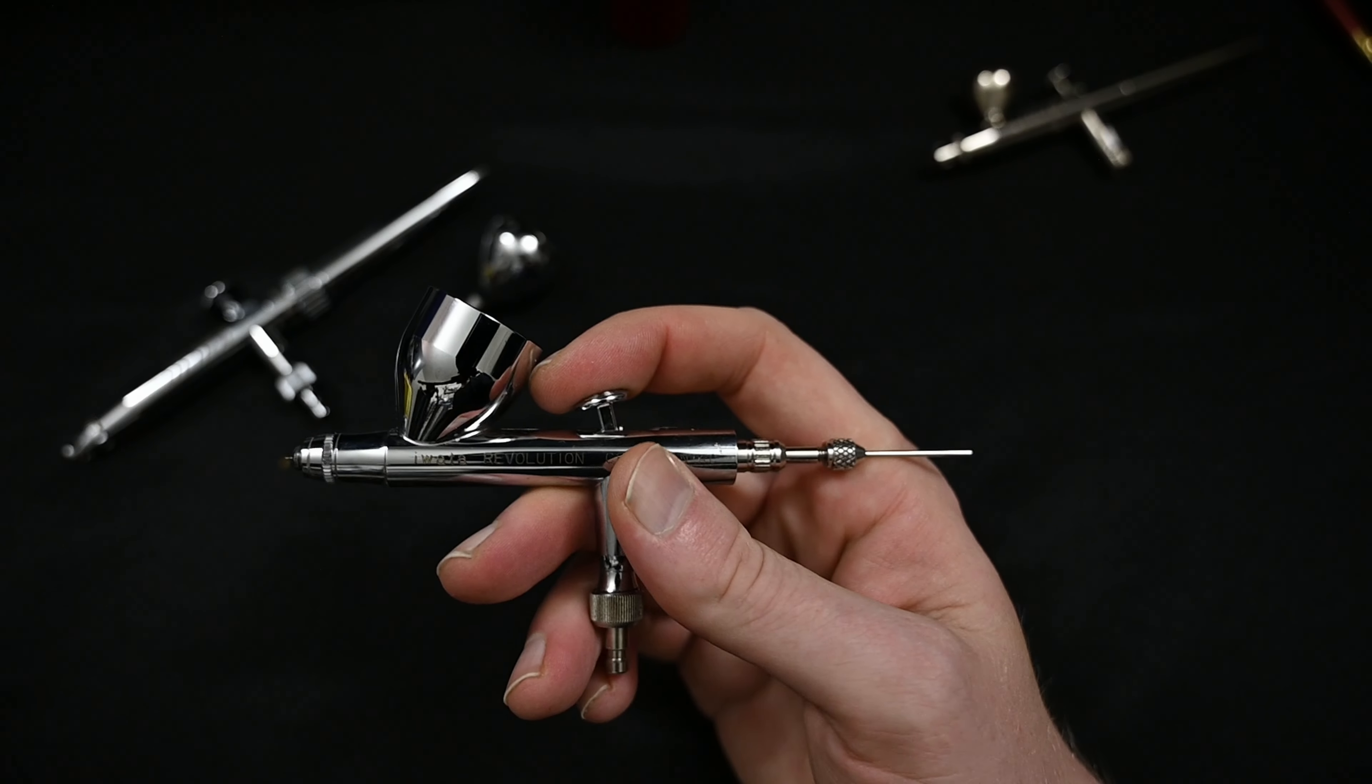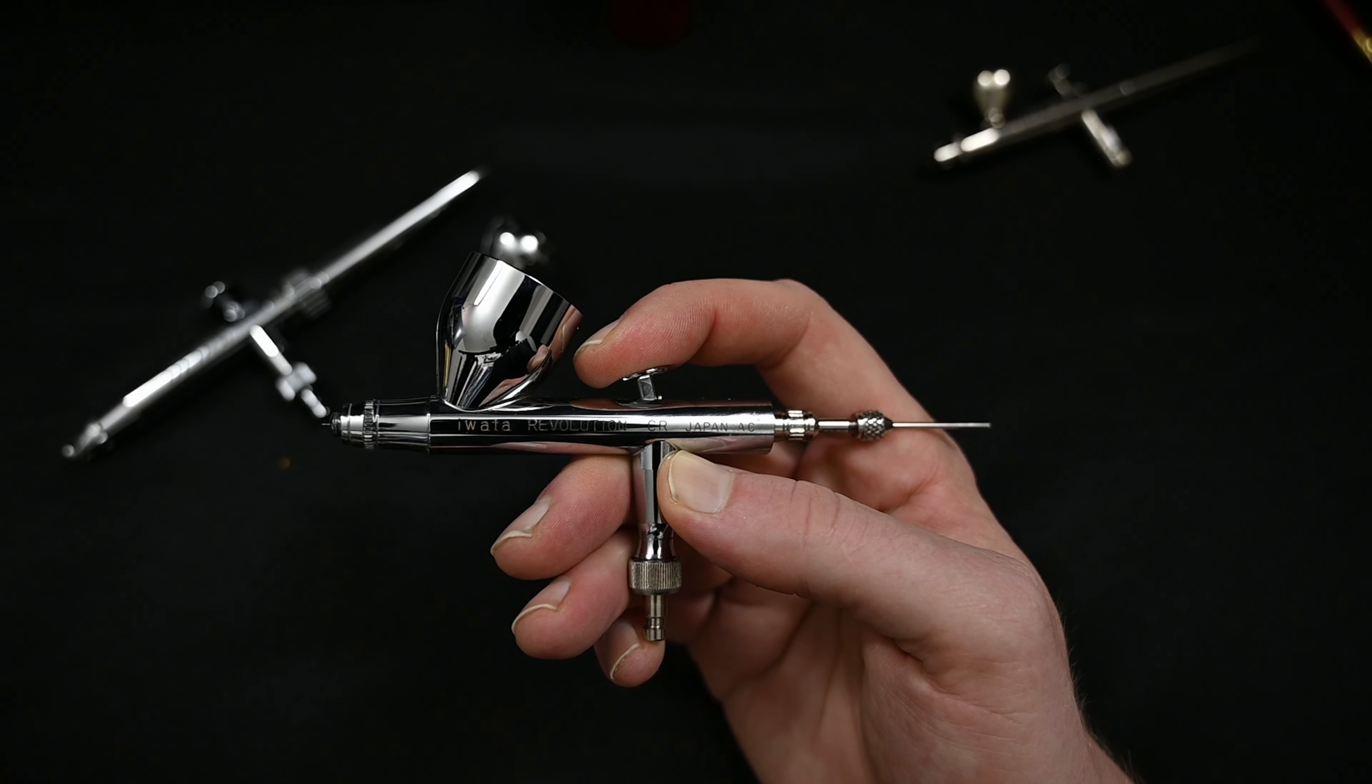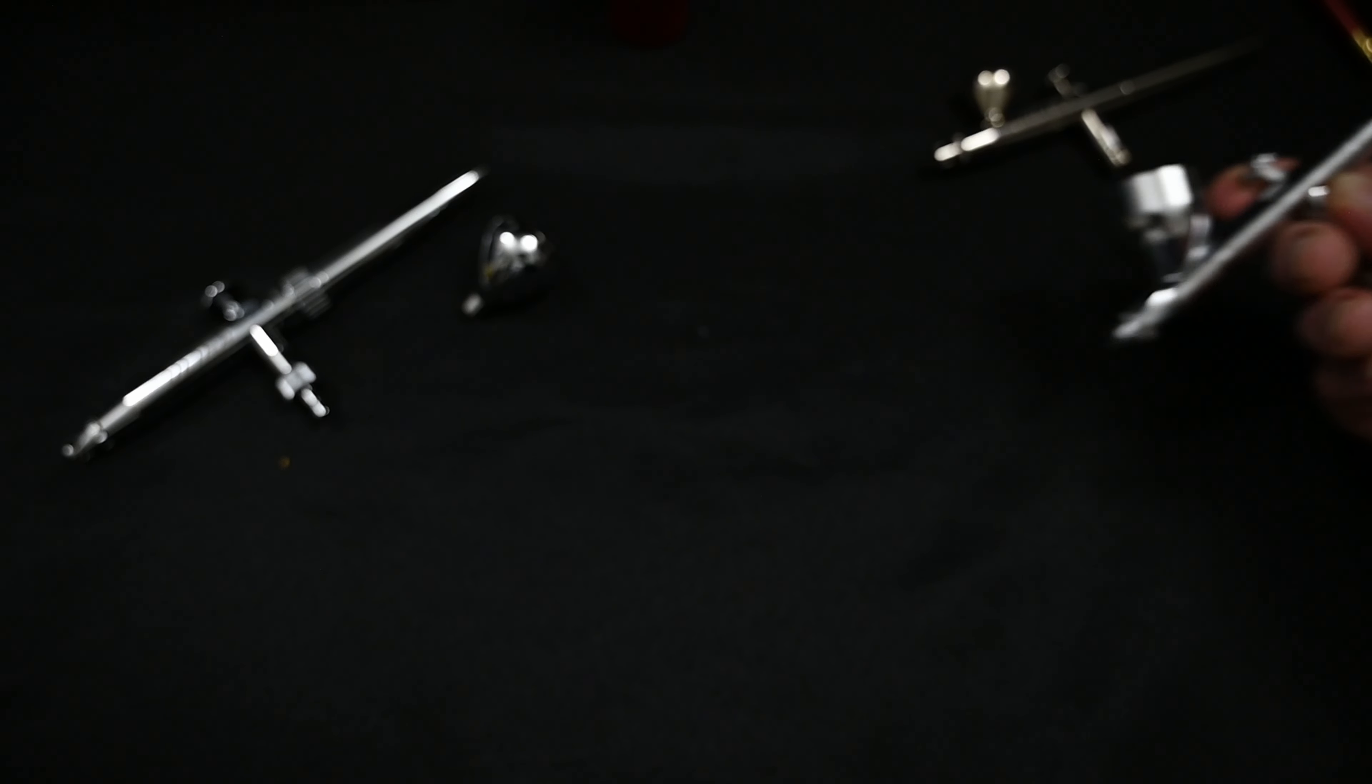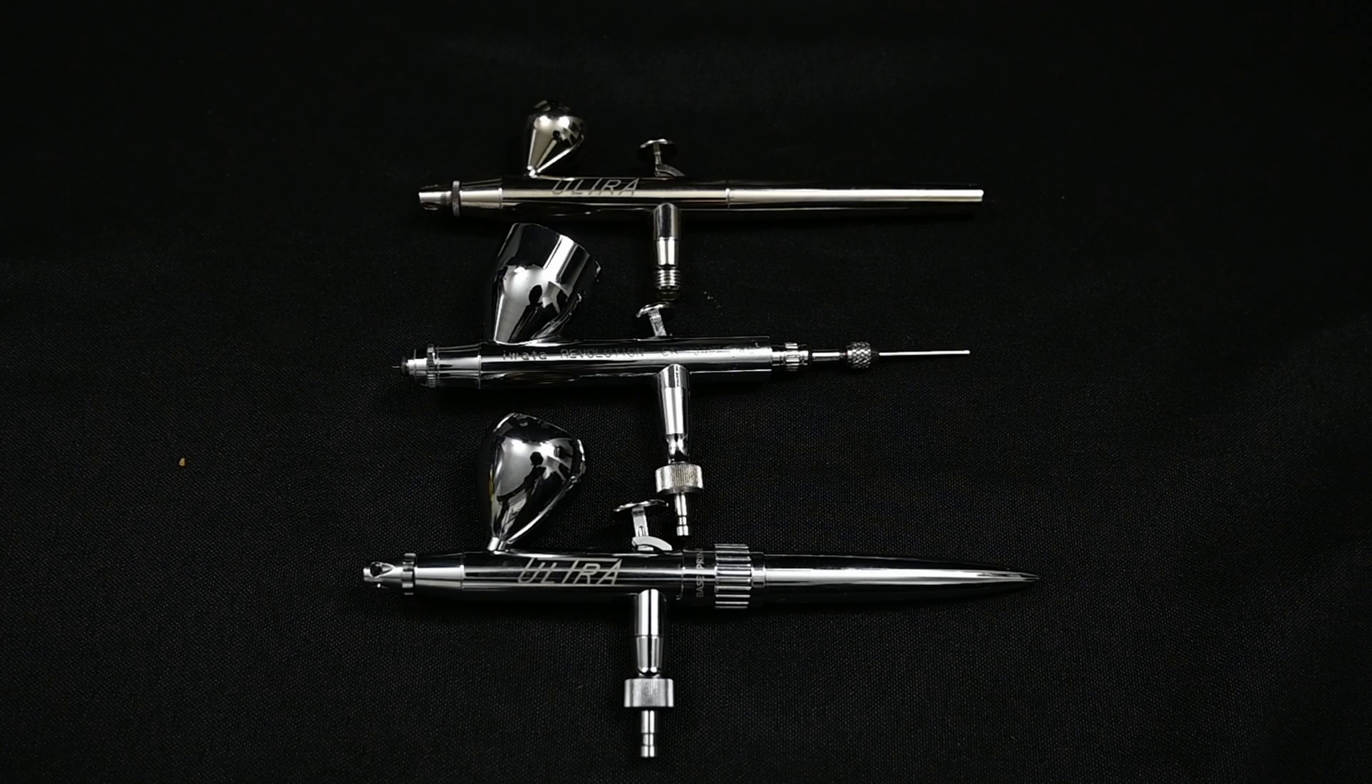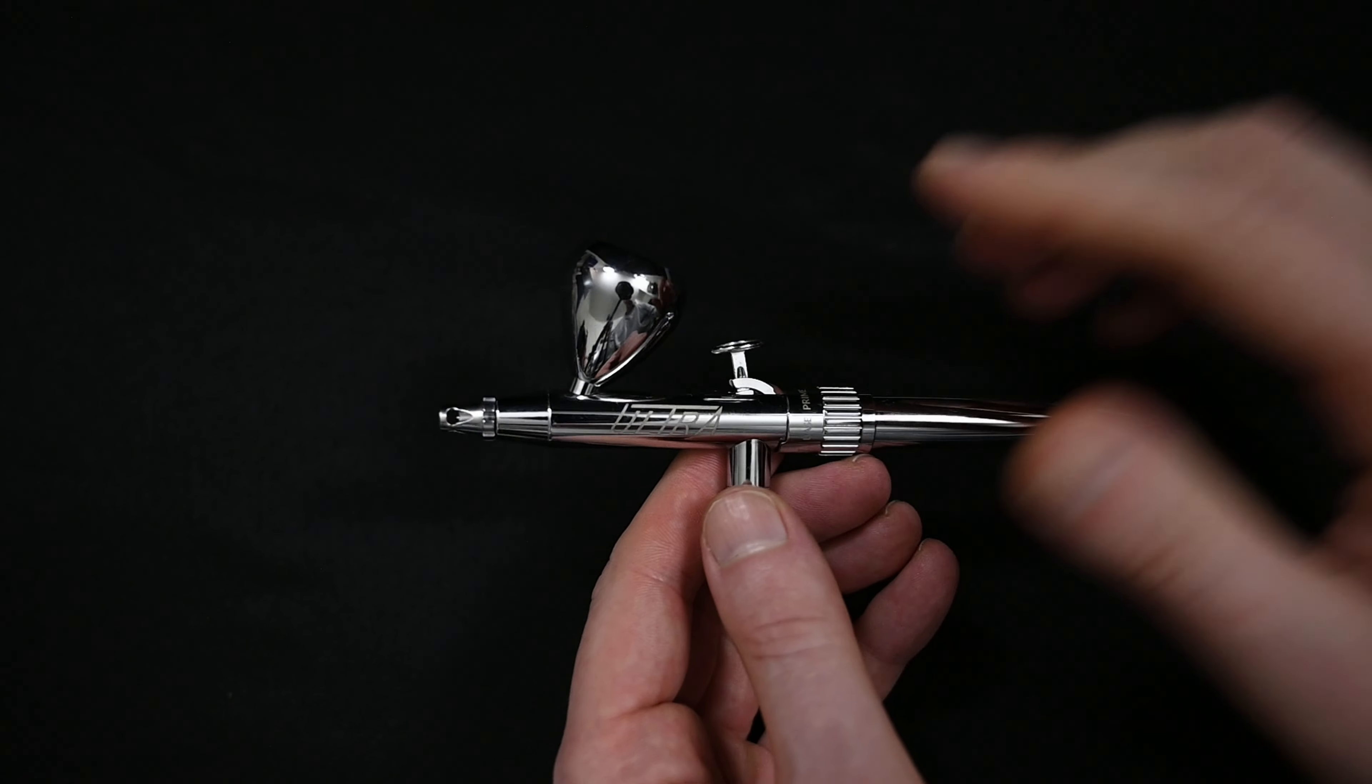Plenty of other airbrushes come with larger cups, like my much-loved Iwata Revolution here. And this model just has a tiny bit more space in there, which makes a big difference and is a lot more comfortable. I think that Harder and Steenback should just give the options for some smaller cups or maybe a cutout in this larger cup. Just anything to make it feel a bit less cramped. I think that would be very helpful.